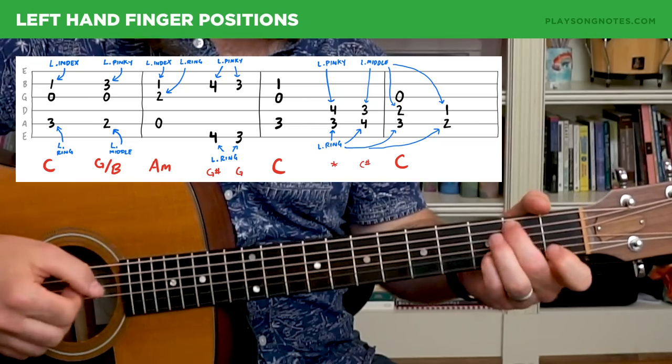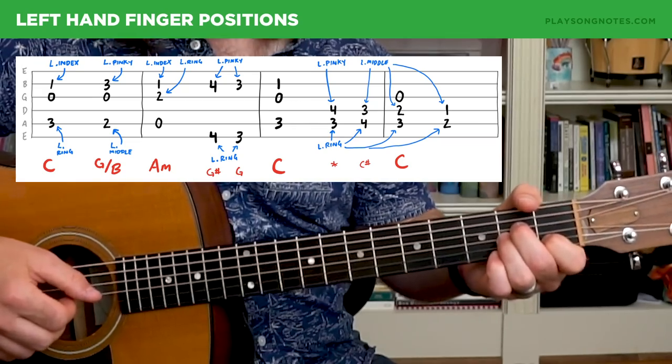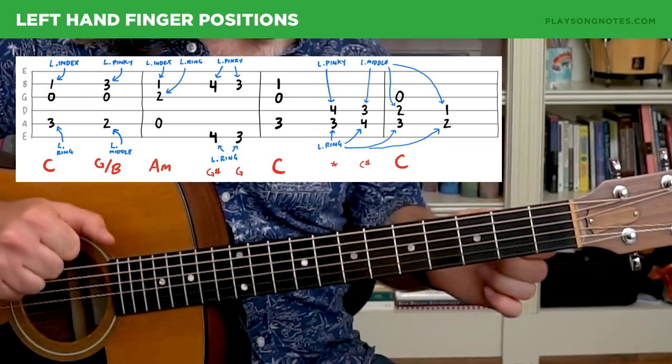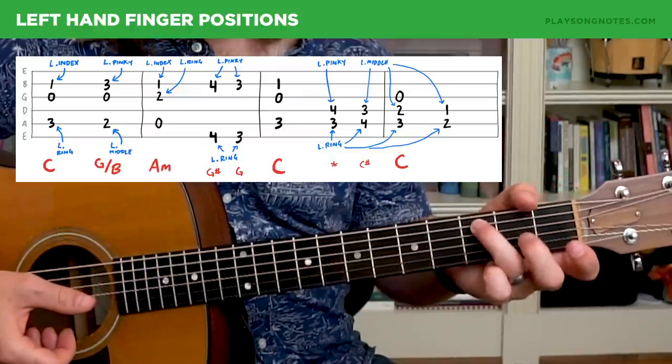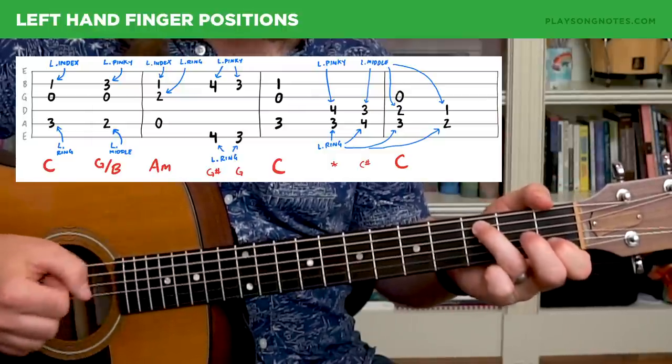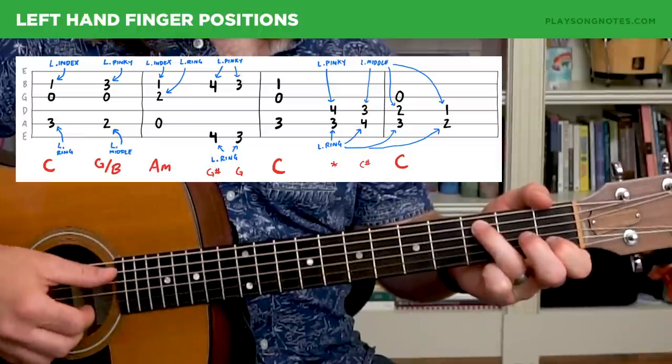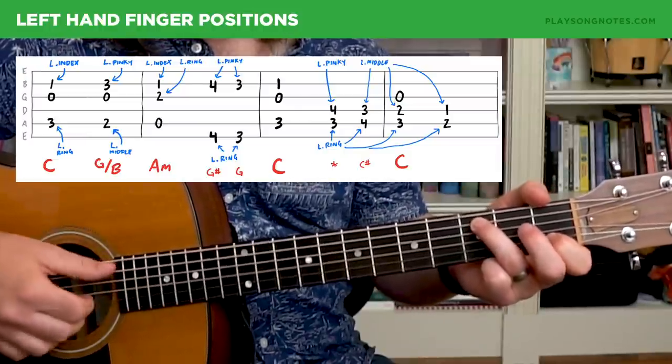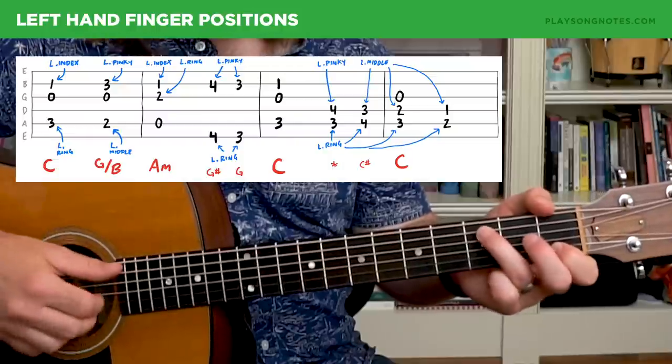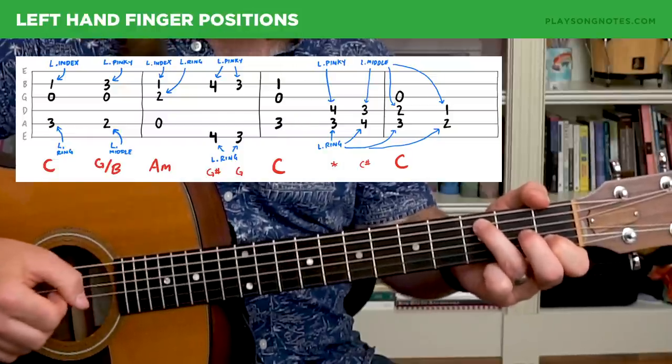The C to a G over B to an A minor. But I want to talk about some of the little nuances here with your left hand in particular. You want to have your ring finger on the base note of the C, obviously, and your index finger up here. And we're basically going to be plucking the fifth string and then the B and the G string.